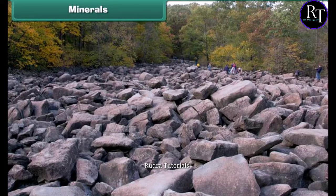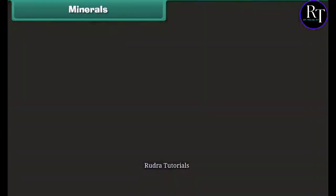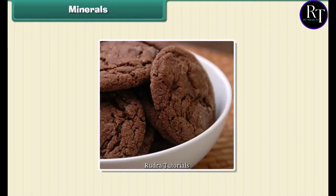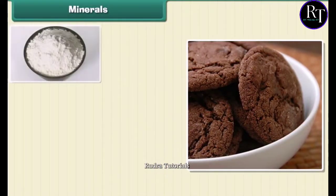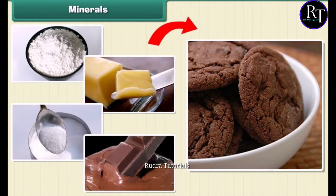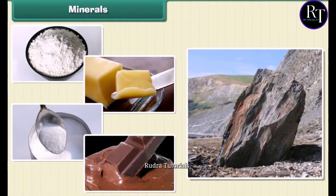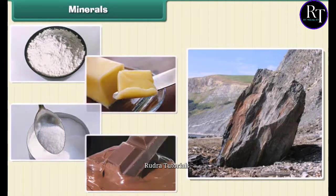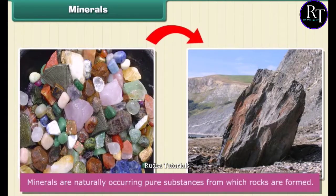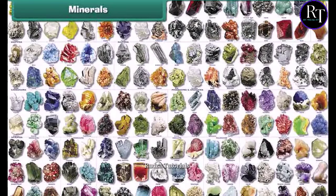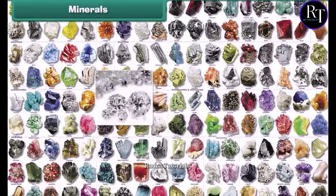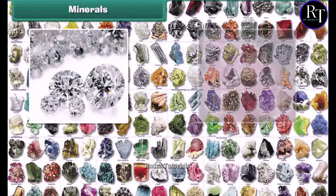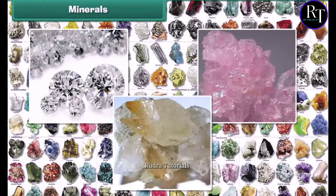Minerals: We have learned about rocks. All rocks are made of minerals. Wondering what minerals are? Think of a chocolate cookie as a rock. The cookie is made of flour, butter, sugar and chocolate. The cookie is like a rock, and the flour, butter, sugar and chocolate are like minerals. Thus, minerals are naturally occurring pure substances from which rocks are formed. There are about 3,000 different minerals in the world, among which diamond is the hardest mineral. Quartz and calcite are two common examples of minerals.